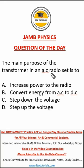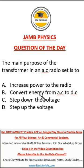Now, what does it do in an AC radio set? Option A says increase power to the radio — no, it does not, because it's all about voltage. Option B says convert energy from AC to DC — no, it doesn't do that.